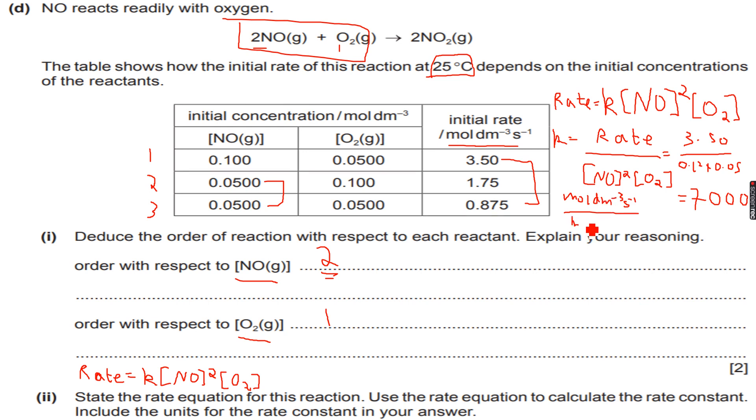So in the denominator the units are mole cube dm minus 9. So if we divide these what we get is we get mole to the power of minus 2 dm to the power of 6 per second. So these are the units of k for this reaction.